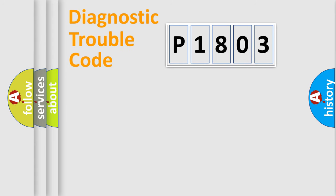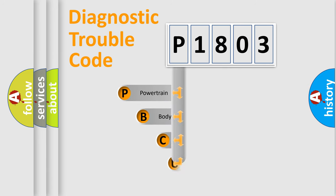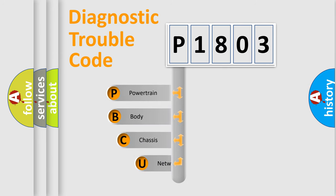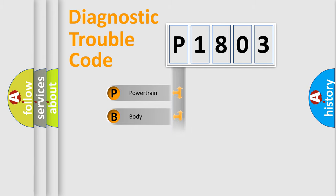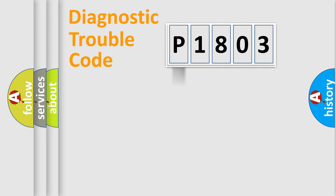Let's do this. First, let's look at the history of diagnostic fault code composition according to the OBD2 protocol, which is unified for all automakers since 2000. We divide the electric system of automobile into four basic units: powertrain, body, chassis, and network.